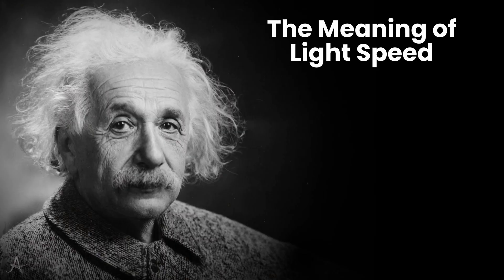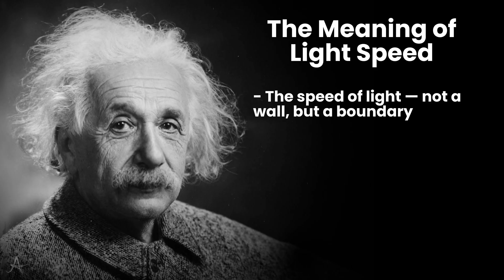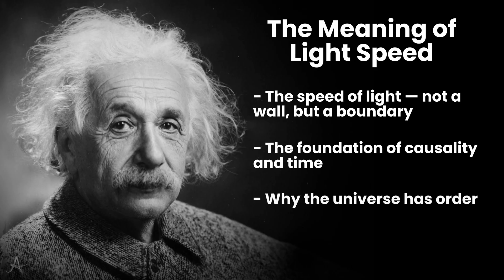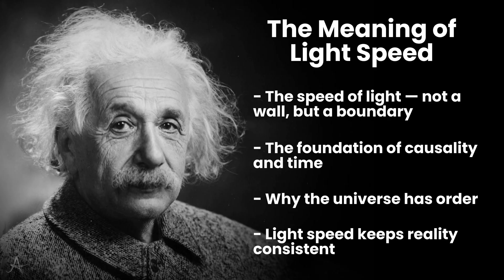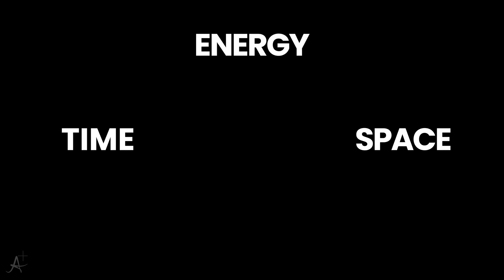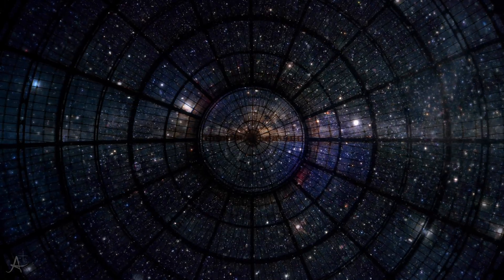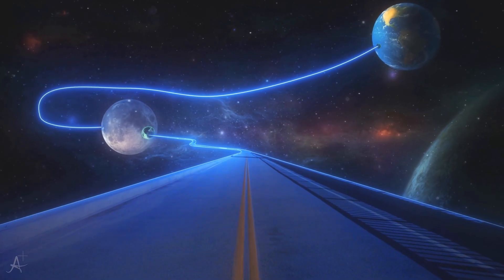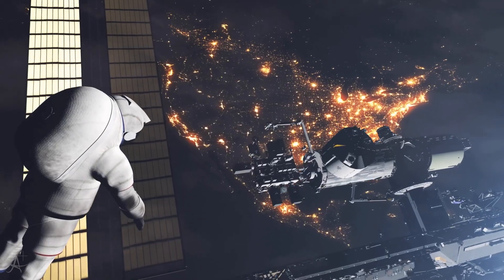For now, though, we're still bound by Einstein's cosmic rule. The speed of light remains the great barrier. Not a wall to be smashed through, but a boundary that defines how our universe works. It's humbling and beautiful at the same time. Because within that limit lies the reason why cause and effect exist, why time flows forward, and why the cosmos has order instead of chaos. Light speed is not just a number. It's the universe's way of keeping everything consistent. But perhaps the most inspiring part is this. Even if we never move faster than light, understanding why we can't has already transformed humanity. It's taught us that time and space are not separate, that energy and mass are interchangeable, and that the fabric of reality itself is flexible. Einstein's speed limit isn't a prison. It's a map of what's possible. And every time we push against it, we uncover something new about who we are and the universe we live in.